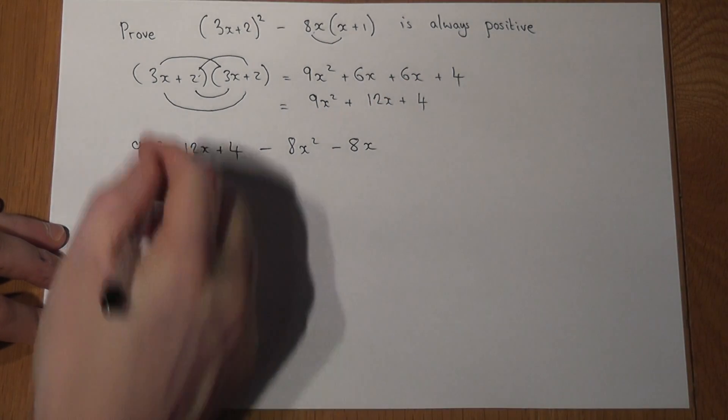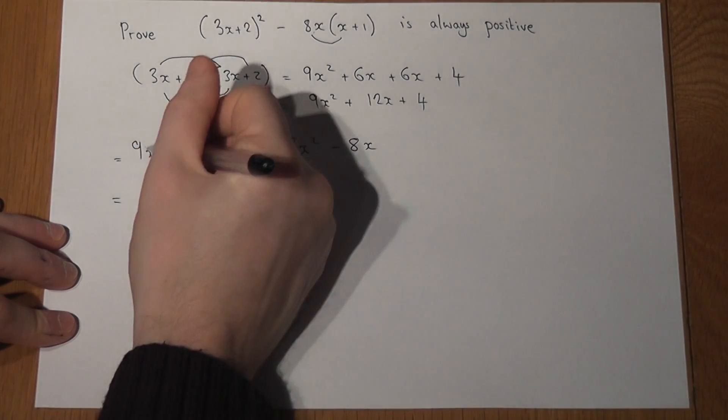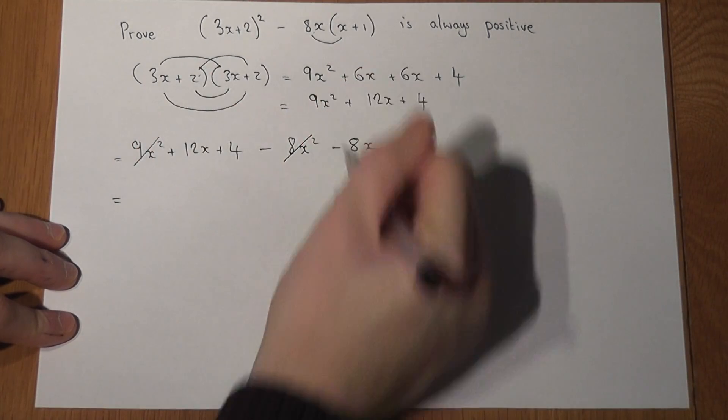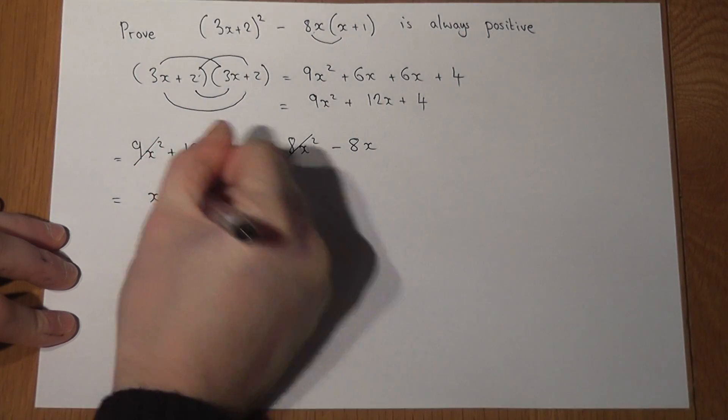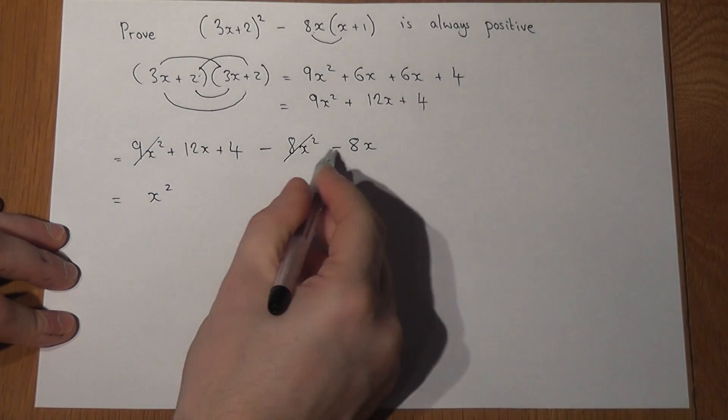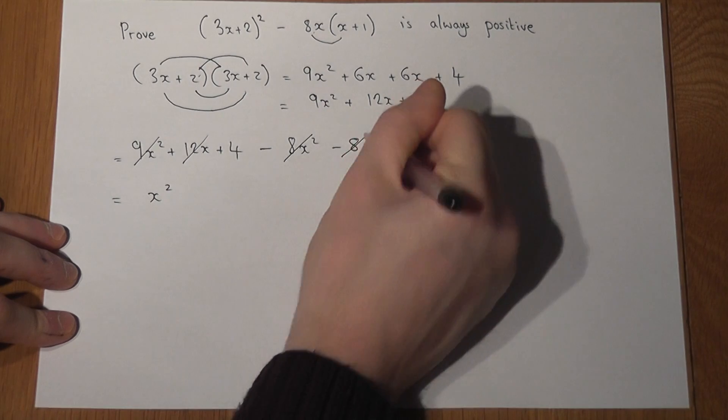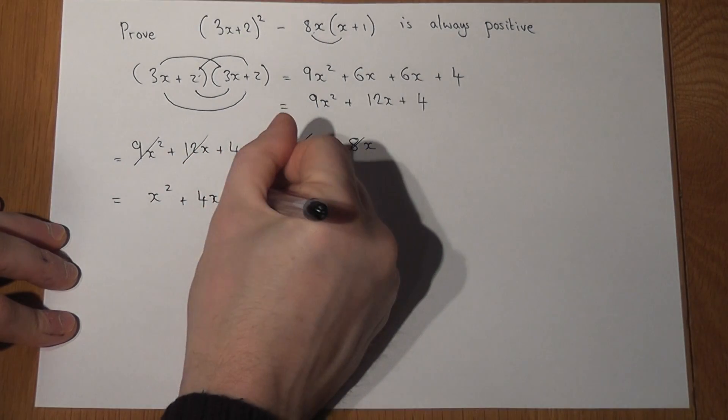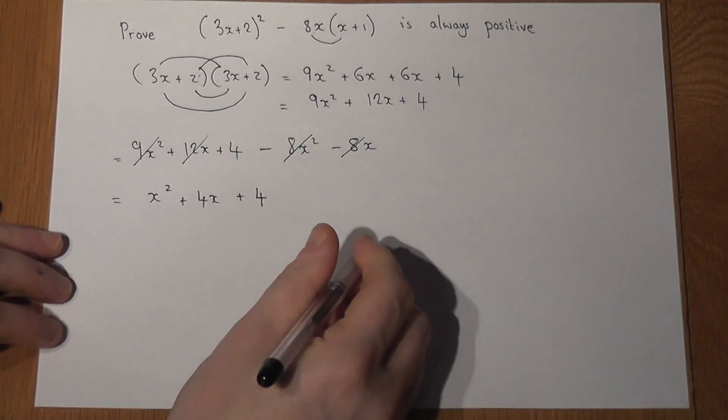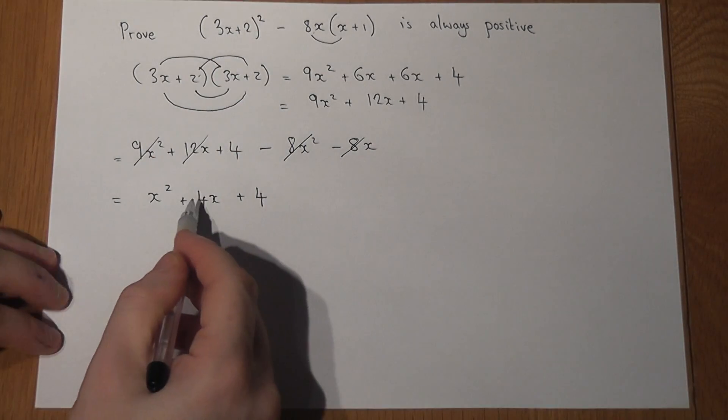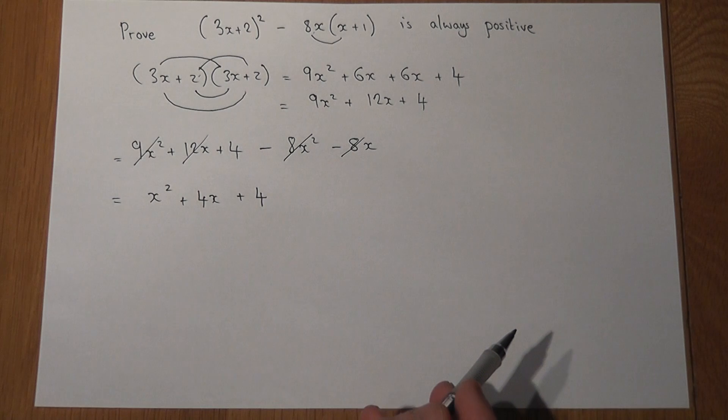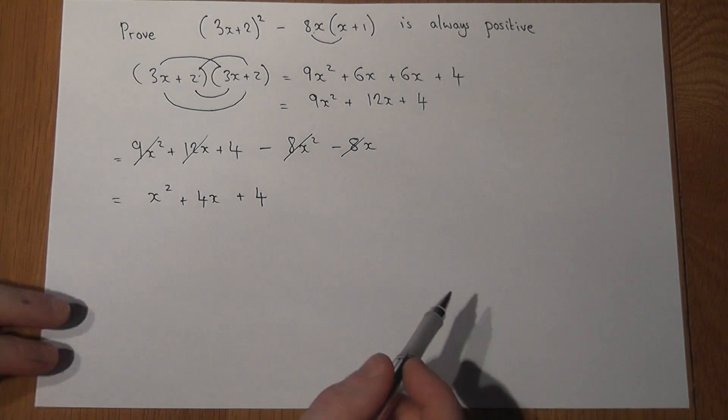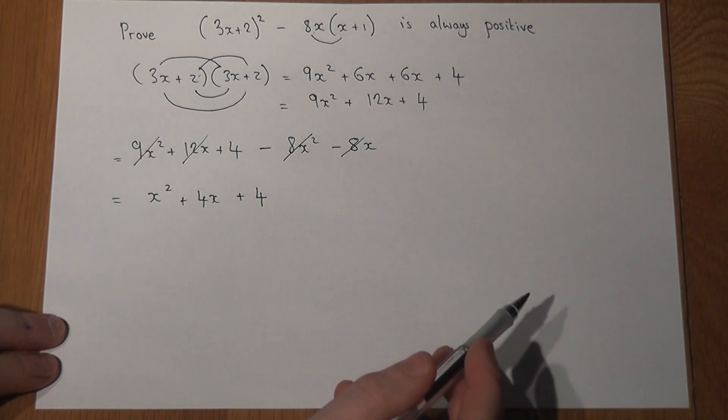My next step then is to simplify. Now 9x squared take 8x squared is just 1x squared. 12x take away 8x is just 4x. There's a 4 left over as well. So this expands to become x squared plus 4x plus 4. And the question was prove it's always positive.